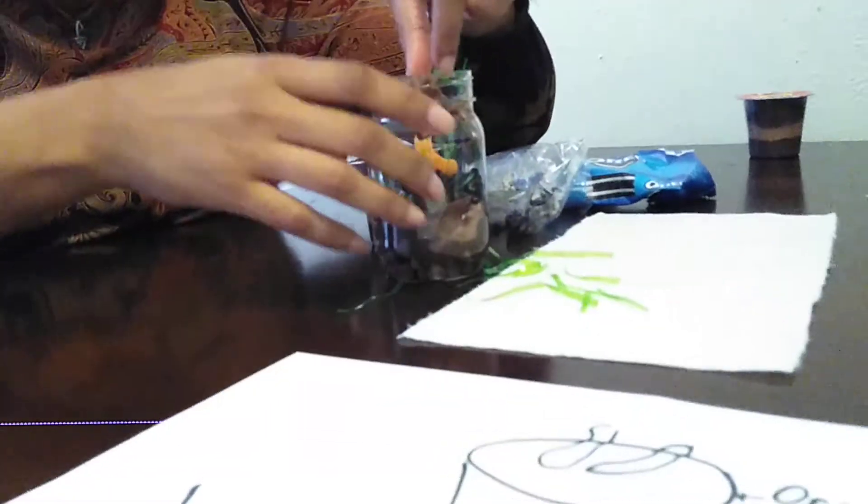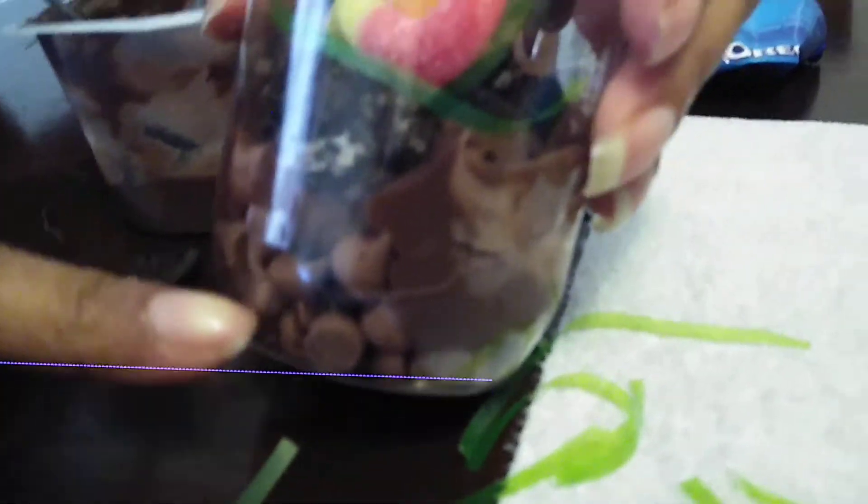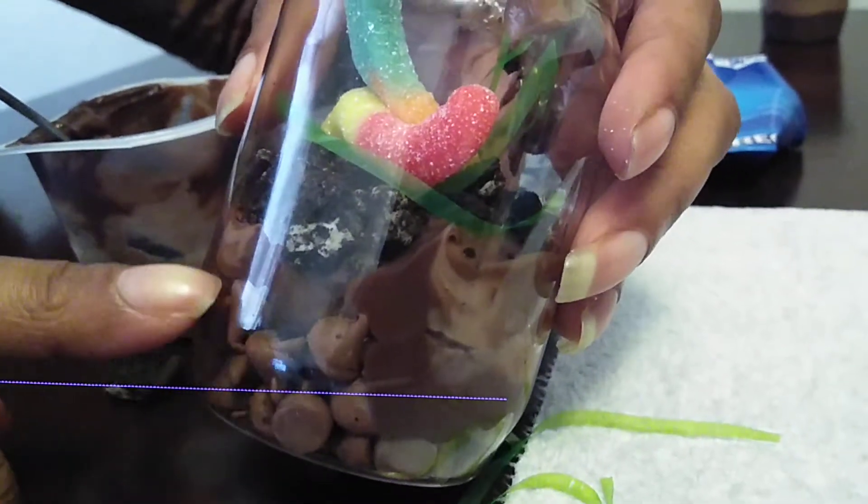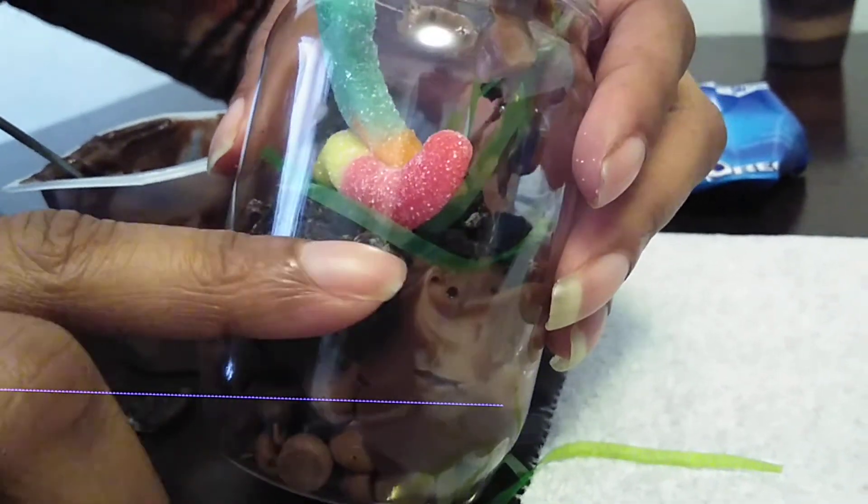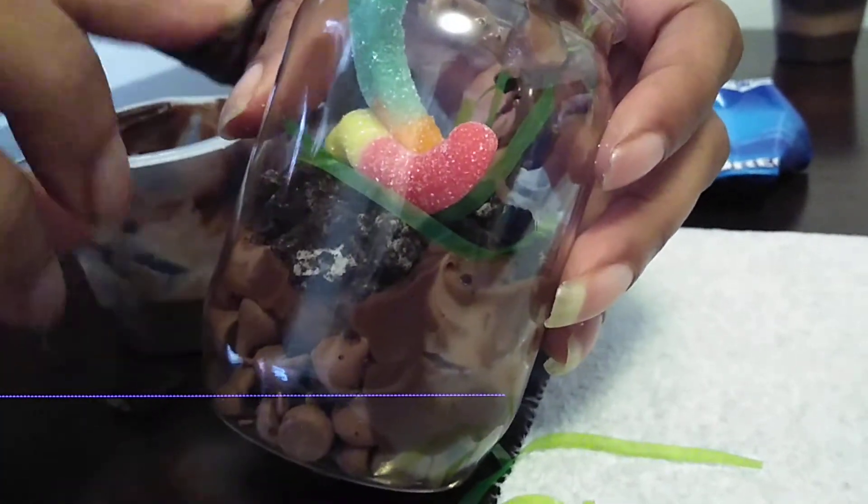I guess I should have used a little bit more, but see? So, we have our bedrock. We have our subsoil. We have our topsoil. And we have our organic material, which is our grass and worms.